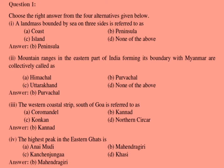Third: the western coastal strip south of Goa is referred to as — answer is B, Kannu.